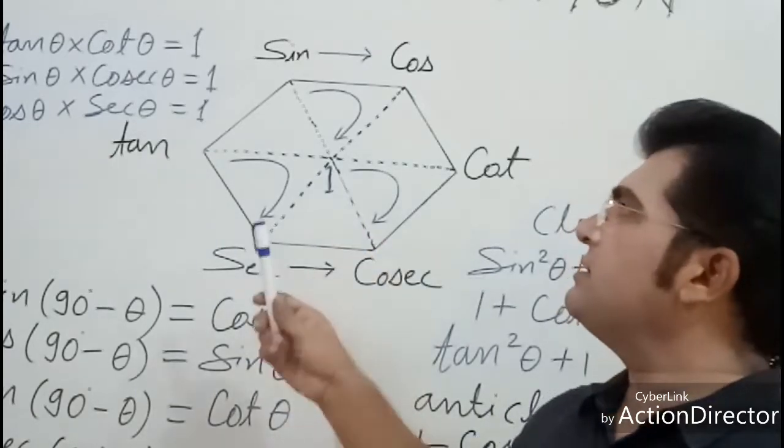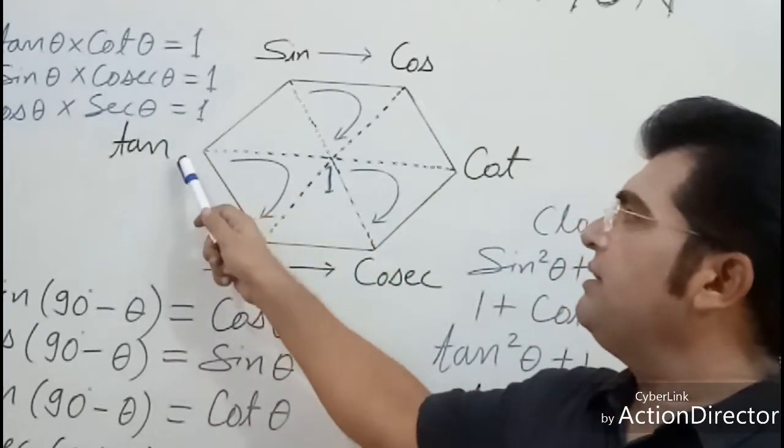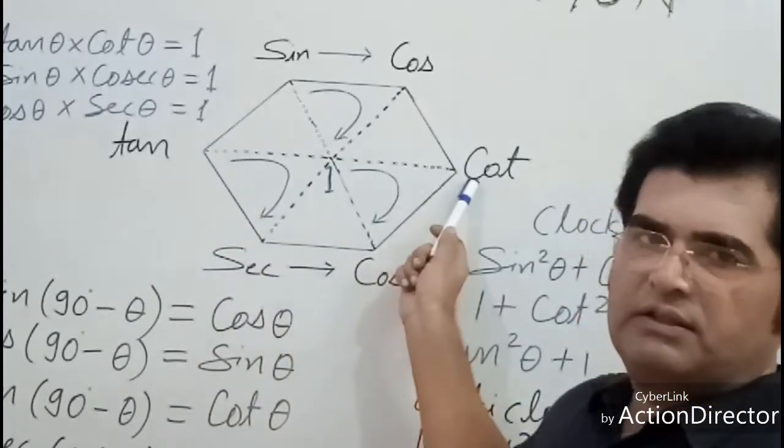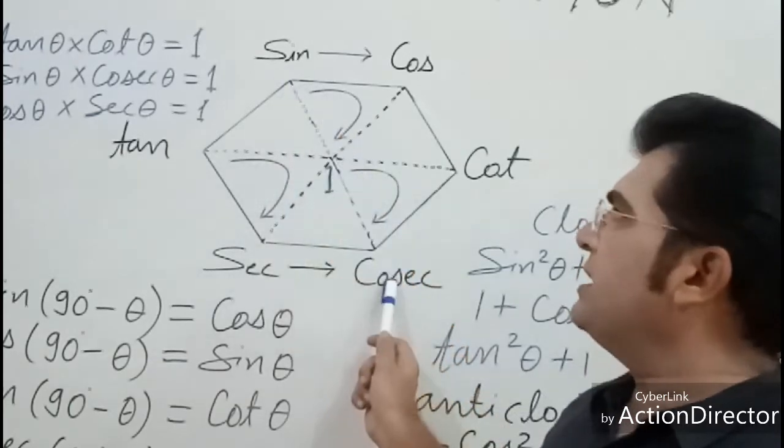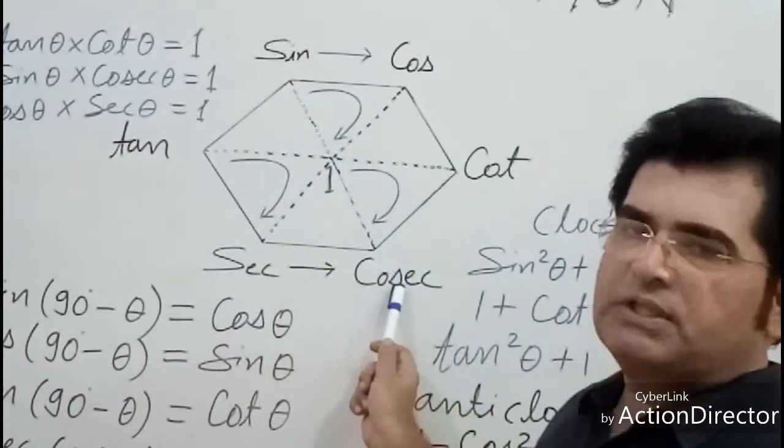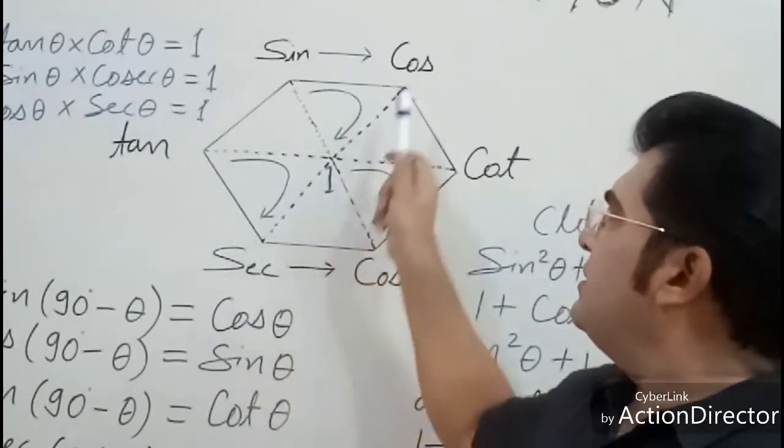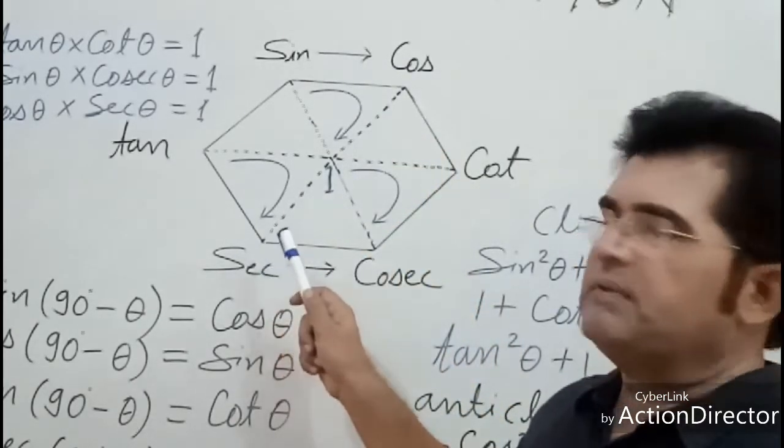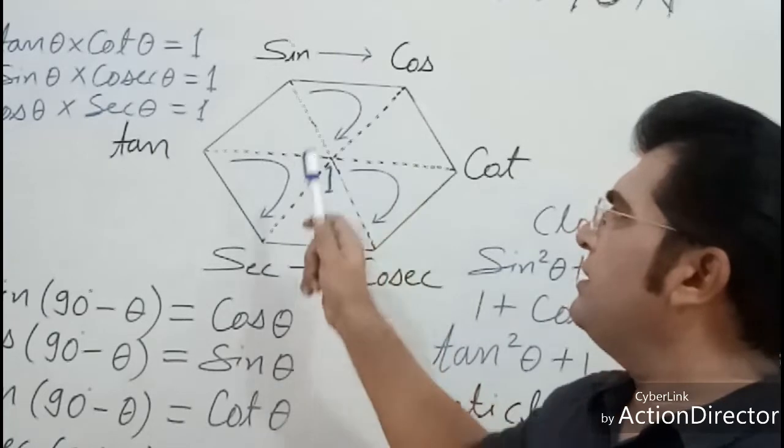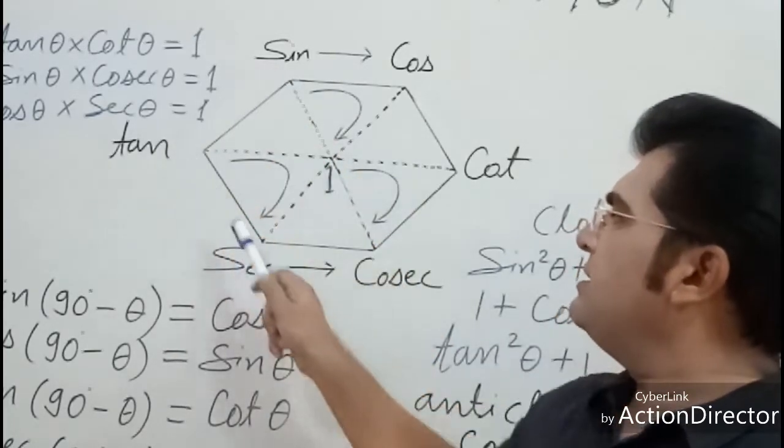After drawing the diagonals, you have to write tan and cot on opposite vertices, then sin and cosec on other opposite vertices, then cos and sec on the opposite vertices.